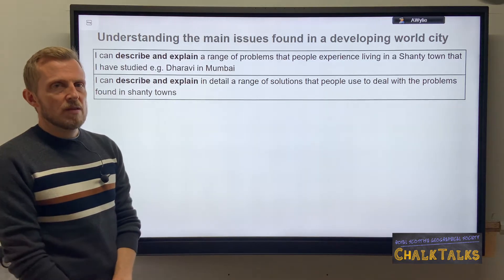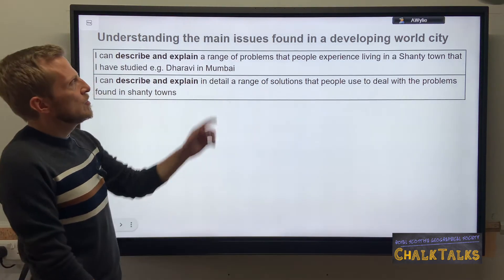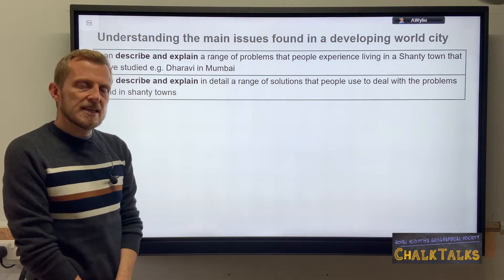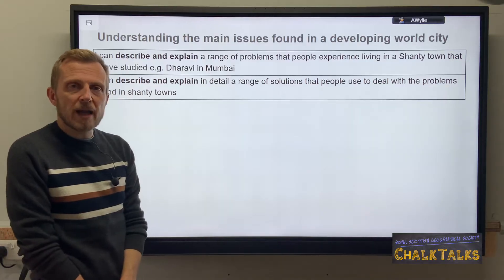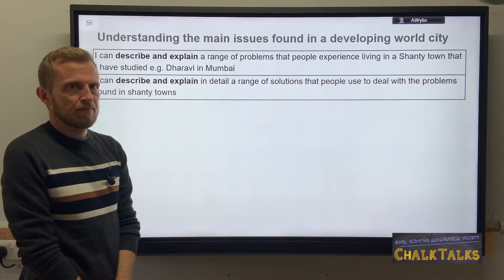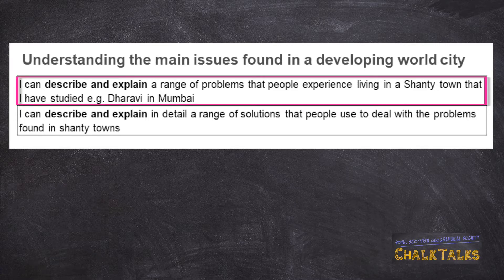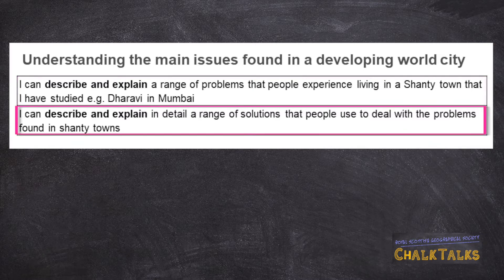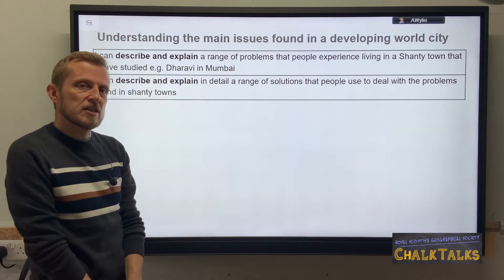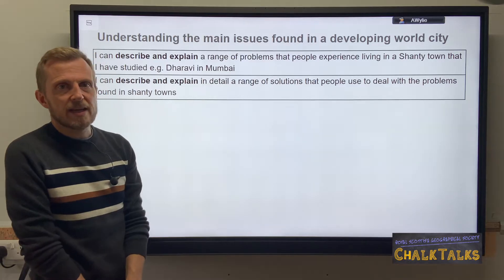In this final pair of outcomes the theme in urban geography switches to a developing world city — possibly a city like Mumbai in India or Rio de Janeiro in Brazil. In the first learning outcome you must describe and explain a range of problems that people experience in different housing areas, which more often than not relate to life in shanty towns. In the second, you describe and explain a range of solutions that people are using to deal with problems whilst living in shanty towns.